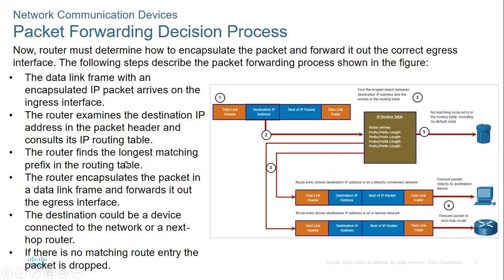The address with the longest prefix match becomes the best route. The router then encapsulates the packet in the data link frame and forwards it out of the egress interface. So we have an ingress interface going into the router and an egress interface going out of the router.